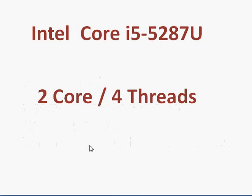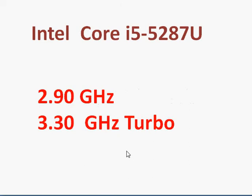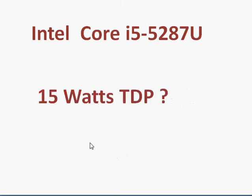The i5 is basically a dual-core, four hyper-thread processor clocked at a reasonably high 2.9 GHz and supports turbo clock up to 3.3 GHz. This means you are going to get very close to current desktop-level performance, even while keeping its power consumption very low. Some sites are reporting its power consumption at 15 watts.